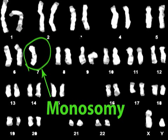Conversely, a fetus with a condition known as monosomy is missing one chromosome. This is also a common cause of a miscarriage.